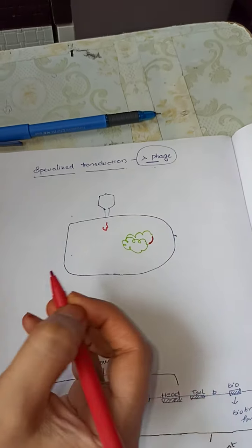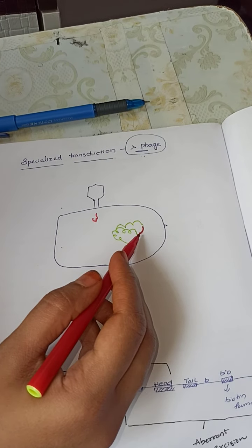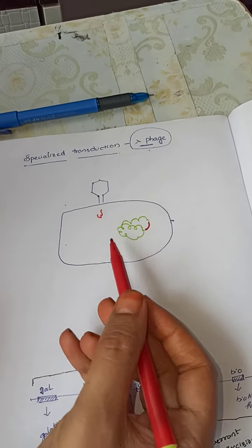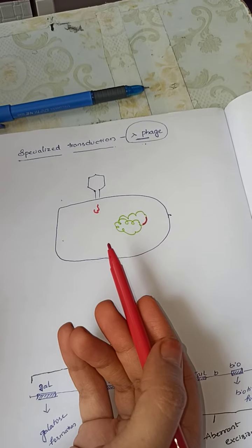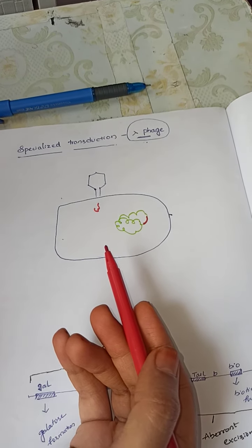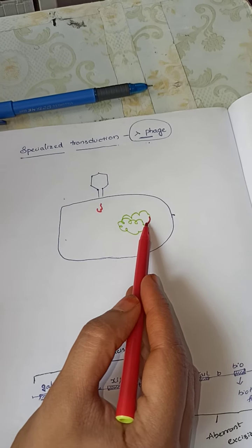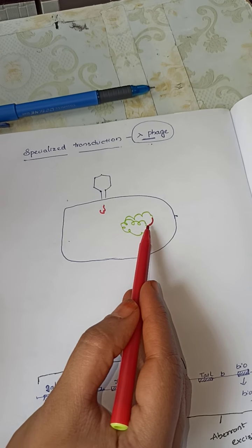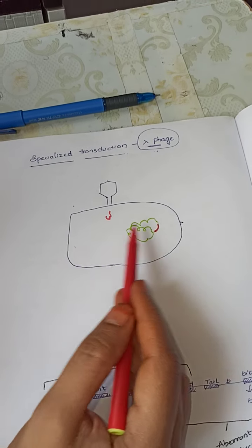During the lysogenic life cycle, the viral genome, instead of breaking down the bacterial genome, gets integrated with the bacterial genome. It stays like that for a few generations, and after a few generations, when there is a shift from lysogenic to lytic life cycle, the viral genome gets excised from the bacterial genome and separated out.